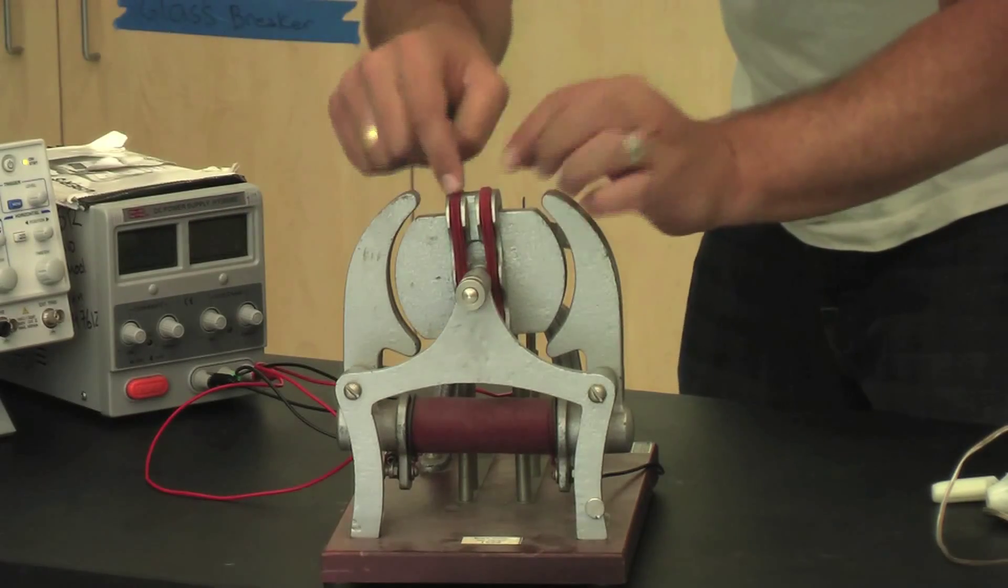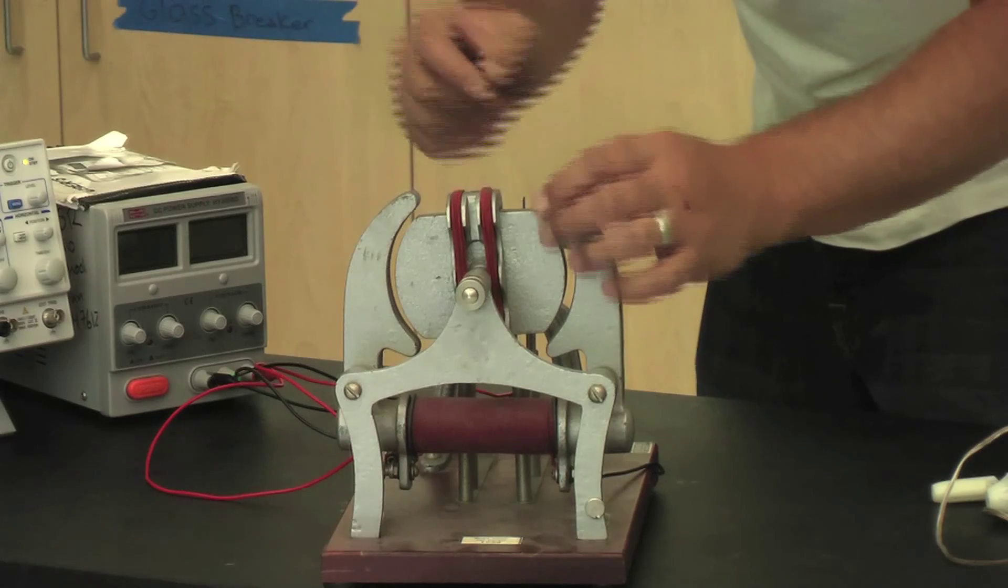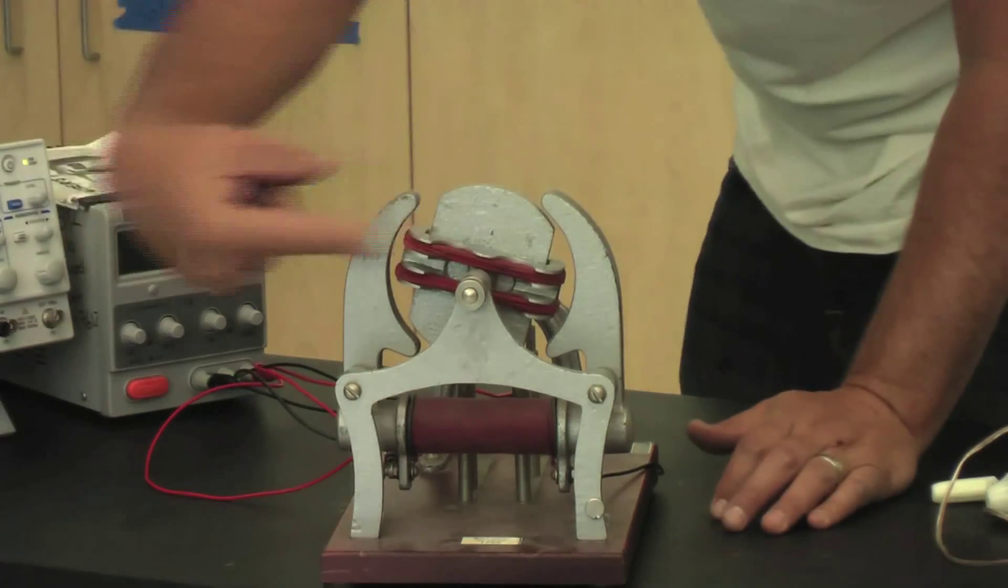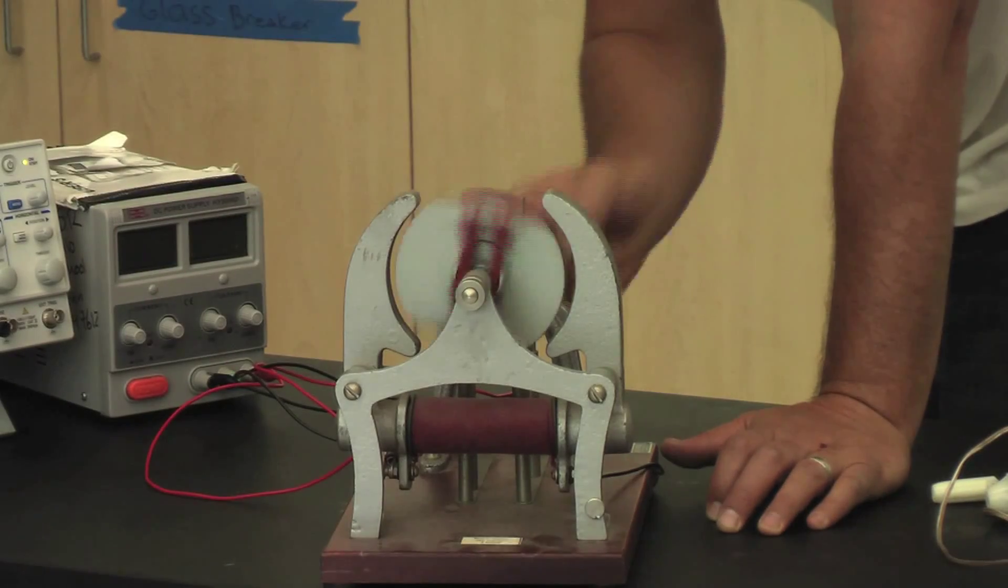And this right here is a coil of wire. And when you spin this coil of wire in this magnetic field, you'll generate electricity.